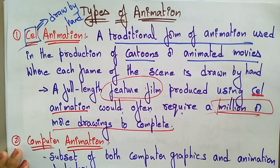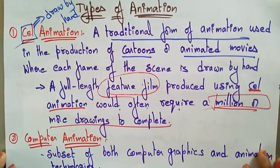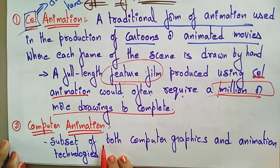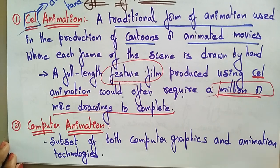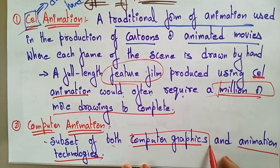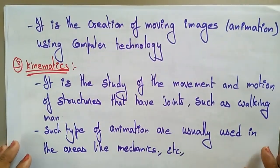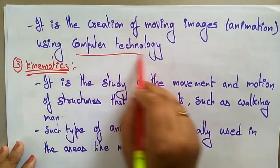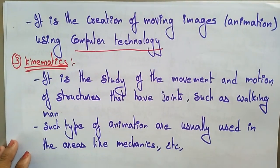Another type of animation is computer animation. In computer animation there is no need to draw the picture by hand — we use computer graphics. It is a subset of both computer graphics and animation technology. Computer animation is a combination of computer graphics and animation technology — it is the creation of moving images using computer technology.